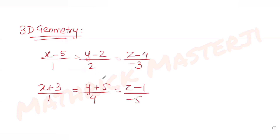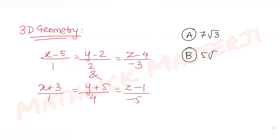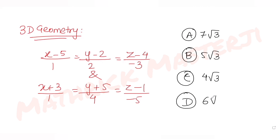We need to find the shortest distance between these two lines. The answer choices given to us are 7√3, 5√3, 4√3, and 6. We need to figure out which one is the correct answer, so let's try to solve this question.